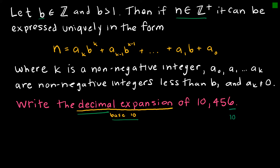If I'm looking at a decimal expansion — which is a base 10 expansion — my first digit is times 10 to the zero, because 10 to the zero equals one. So six times one; my next digit would be times 10 to the first, putting it in the tens place, giving 50. The four is in the hundreds place (10 squared), the zero is in the thousands place, and the one is in the ten thousands place.